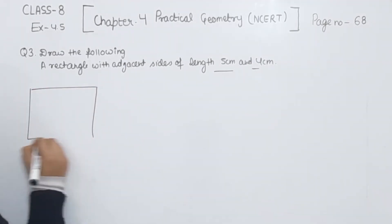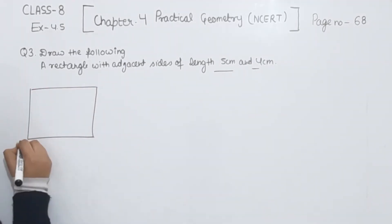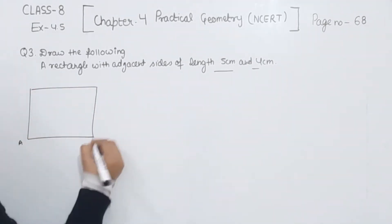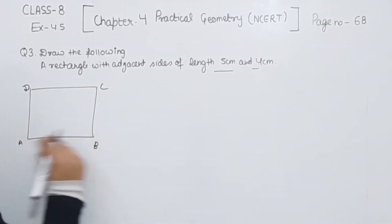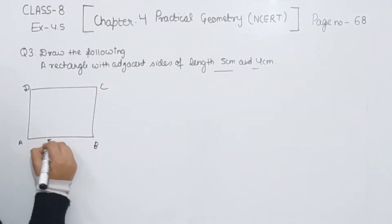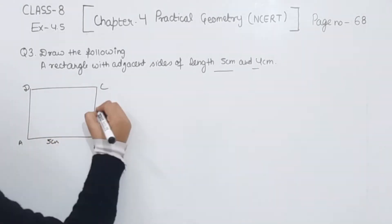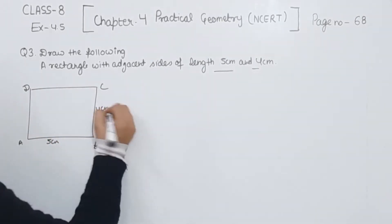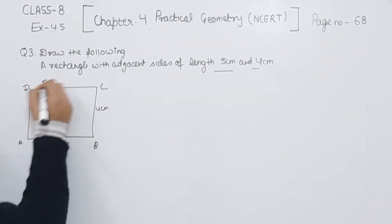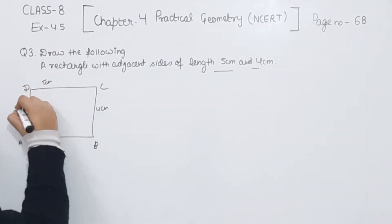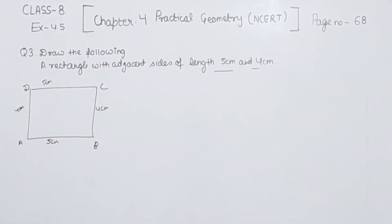So this will be the rectangle. We will have points A, B, C, and D. This side is 5 cm and this one is 4 cm, and these are the opposite sides we are having. This is the rectangle with the measurements we are given.